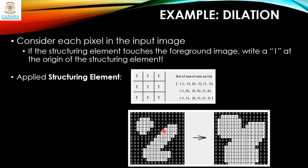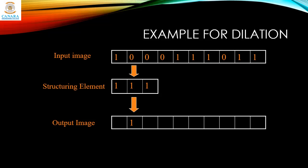We can fill the gap between these two objects. When you place the center pixel here, it will be in touch with these three ones, so it will become one. When you place it at another location, it will be in contact with a neighboring one and again turned into a white pixel. Similarly, placing the structuring element at the next location will bridge the gap, and this will be the output result of dilation.